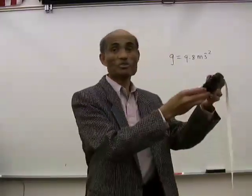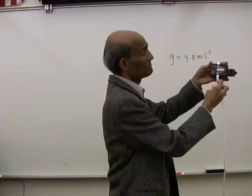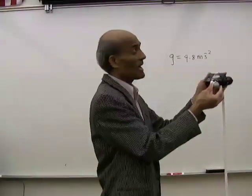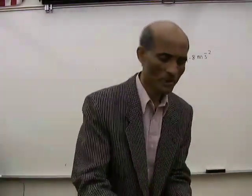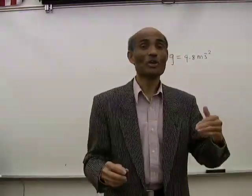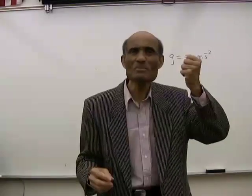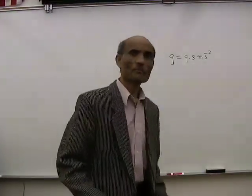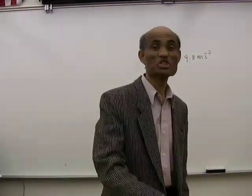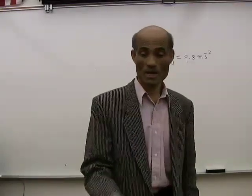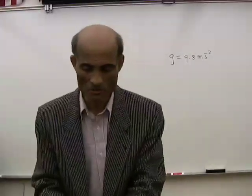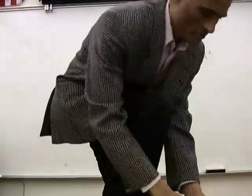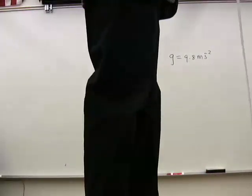Let's measure it. I have the ticker timer and the paper that goes underneath the carbon, and I have the ball I am going to drop. Because it is going to fall very fast, we are not going to get many dots, which limits the accuracy. I am going to climb on this table and then drop the ball. I am going to turn on the timer and hold it to a considerable height.